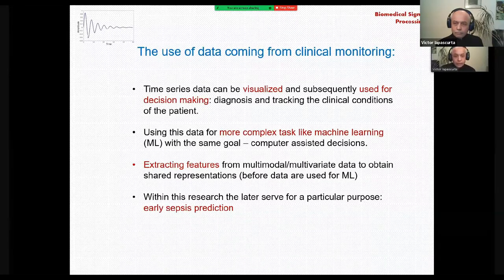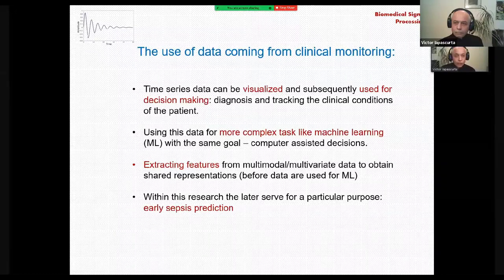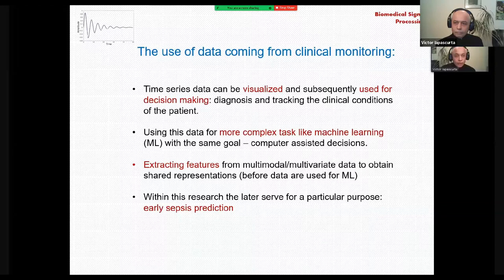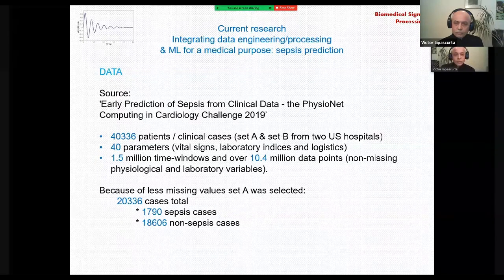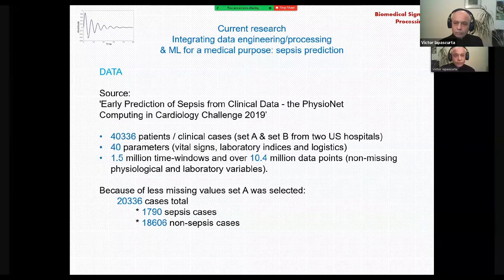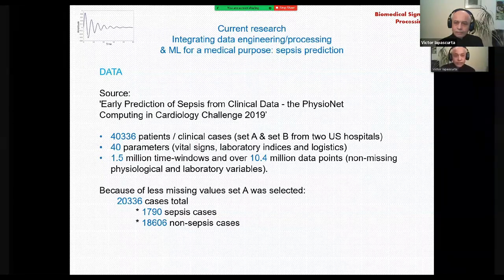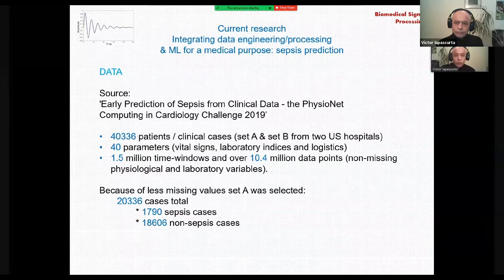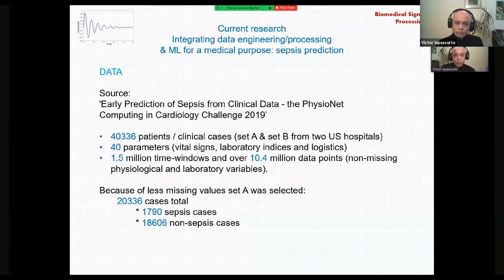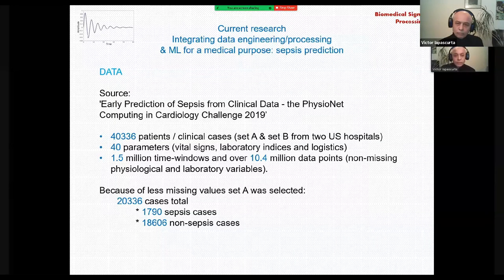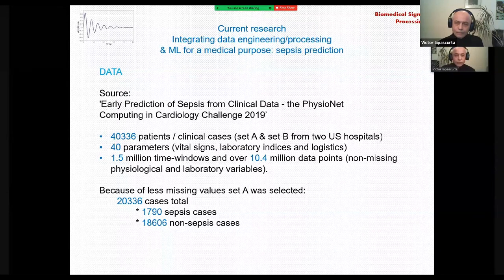In the framework of this research, we are building an early sepsis prediction system. By early, I mean four hours, at least four hours before sepsis can be confirmed using regular clinical tools. The current research uses data coming from a 2019 challenge, early prediction of sepsis from clinical data that comprises over 40,000 clinical cases, set A and set B, coming from two distinct US hospitals. This data includes 40 parameters like vital signs, laboratory indices, etc., 1.5 million time windows and over 10 million data points. And as set A contains much less missing data, it was selected for further processing.